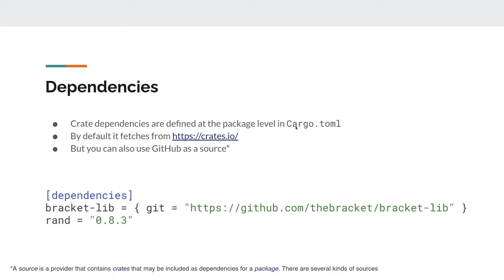The cargo.lock file locks in library versions when you build. If you had 0.8.3 locked in and later change to 0.9, you have to tell Cargo to update the lock file. If you just specify 0.8, it pulls the latest — say 0.8.3 — and locks it. If 0.8.5 comes out later, Rust will not automatically use it unless you run cargo update, which updates the lock file to the new version.